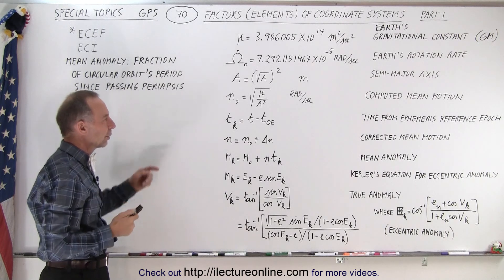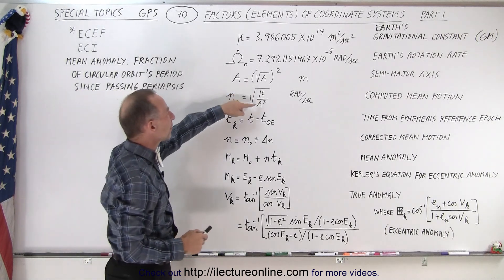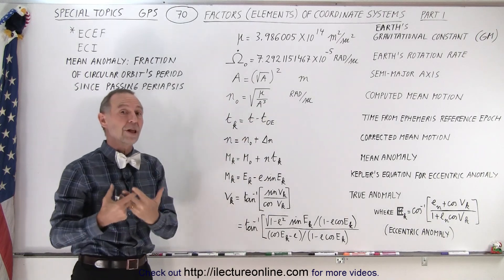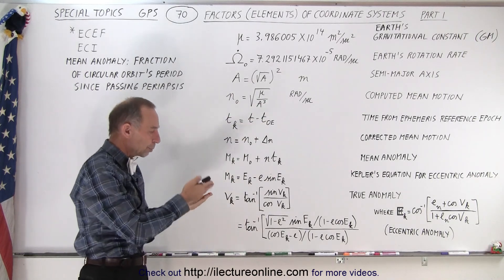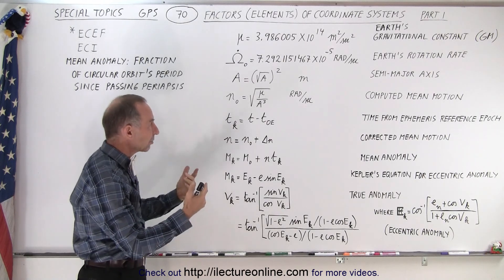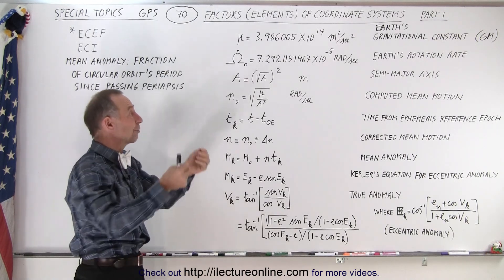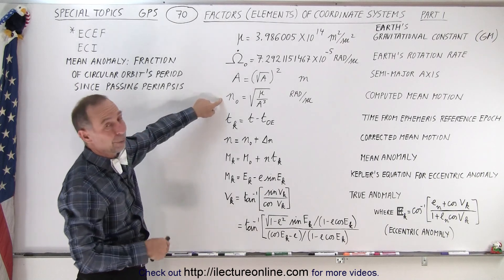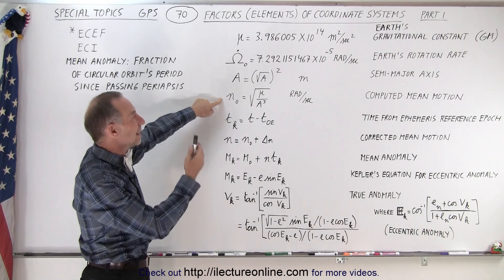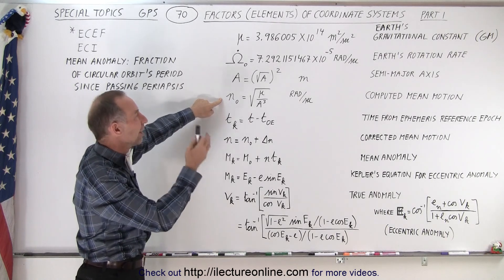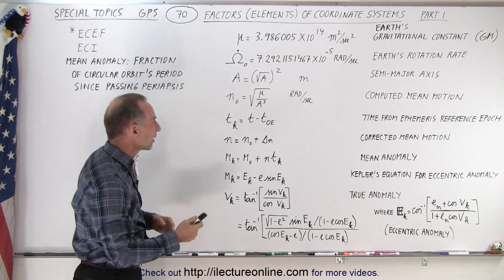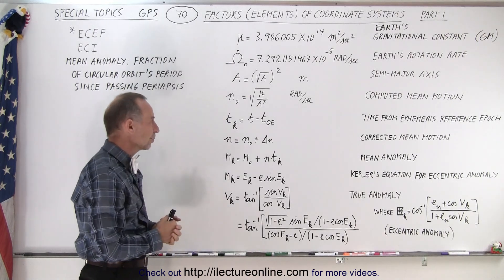So what is the computed mean motion? If we take mu divided by a and take the square root, we get the orbital velocity. Then if we take the orbital velocity and divide it by the semi-major axis, we get the orbital velocity in terms of radians per second. A better way of calling this constant is that it's the orbital velocity of the SVs — the space vehicles or satellites — expressed in radians per second.